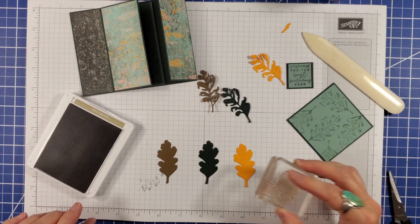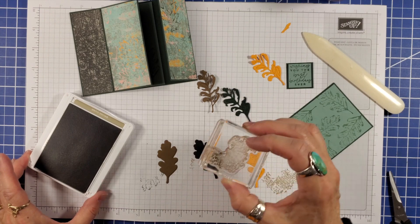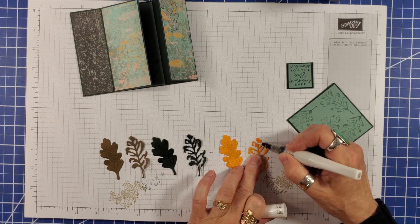I used second generation ink to stamp crumb cake splotches on mango melody, evening evergreen, and soft suede die cut leaves.